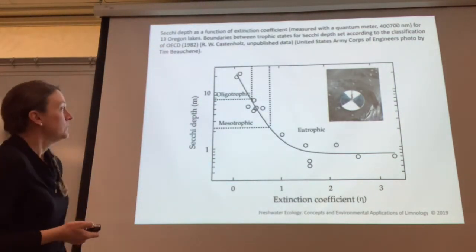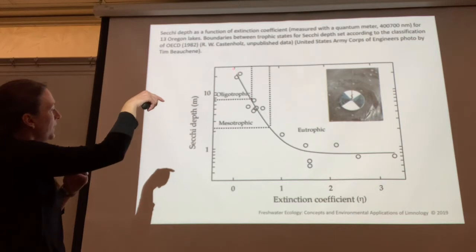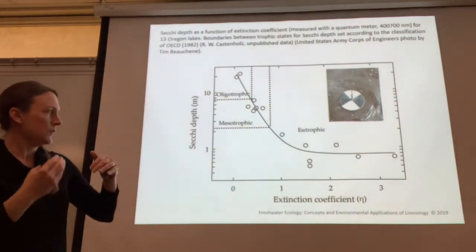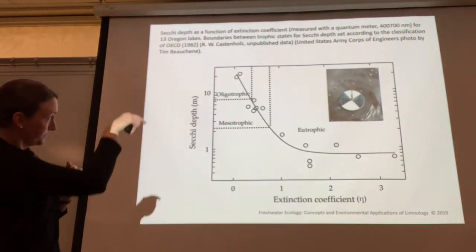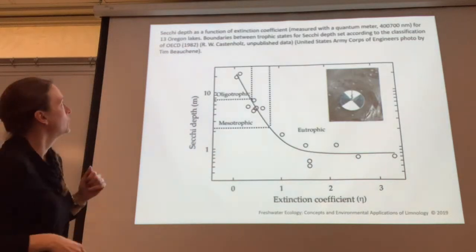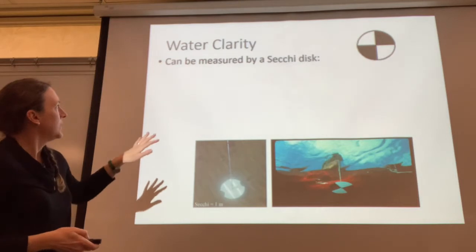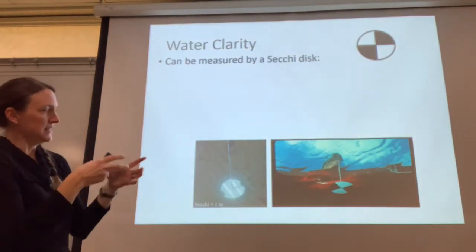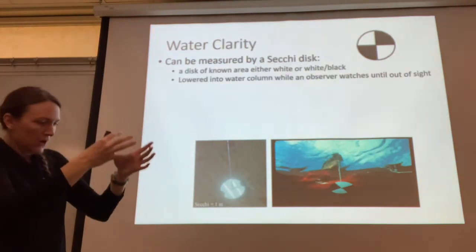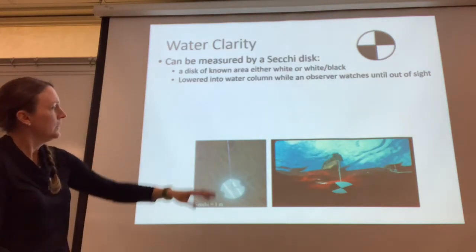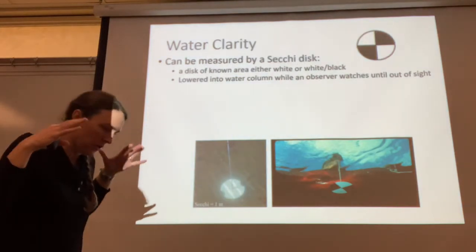We can use what's called a Secchi disc to measure light penetration in a lake. The extinction coefficient — basically how rapidly light is lost — is very steep for an oligotrophic lake and very shallow for a eutrophic lake. The Secchi disc is a black-and-white disc (sometimes just white) that you lower down a column into the water.